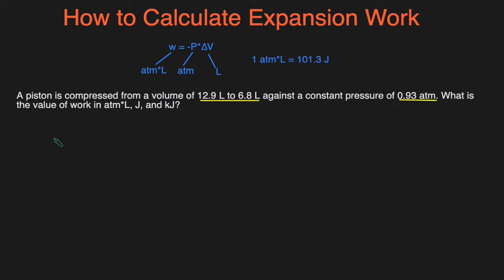So we can use the equation for expansion work: W = -P∆V. The pressure is 0.93 atm, and the change in volume is the final volume minus initial volume, so 6.8 minus 12.9 liters.